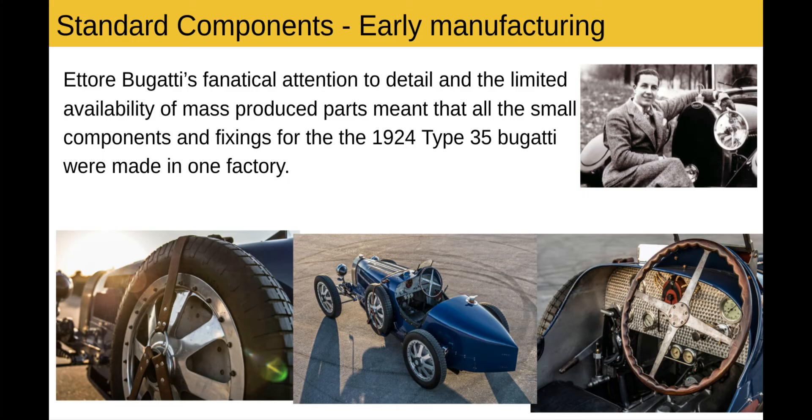Standard components — early manufacturing. Ettore Bugatti had a fanatical attention to detail, and combined with the limited availability of mass-produced parts, this meant that all the small components and fixings for the 1924 Type 35 Bugatti were made in one factory. So if you see this vehicle here, which is the Type 35 Bugatti, the nuts, the bolts, every little part was controlled and manufactured in one factory.